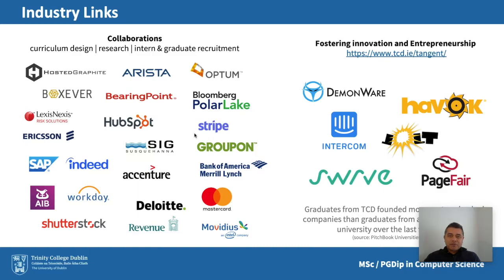The college is extremely supportive of innovation and entrepreneurship, with numerous funding opportunities to help both staff and students. The companies listed are examples of success stories — startups that emanated from the school and became successful. One brief example is Havoc, a company that develops middleware for both the games and movie industry. Established about 20 years ago, it was purchased by Intel around 2007 for 100 million euro, and has since been acquired by Microsoft.